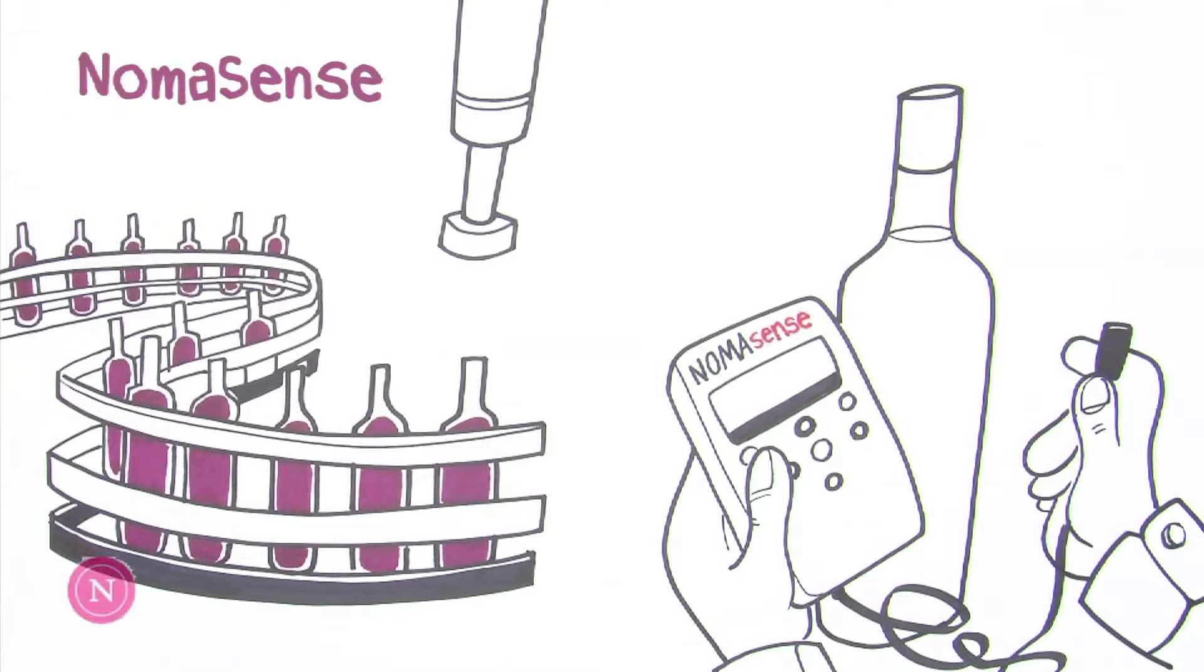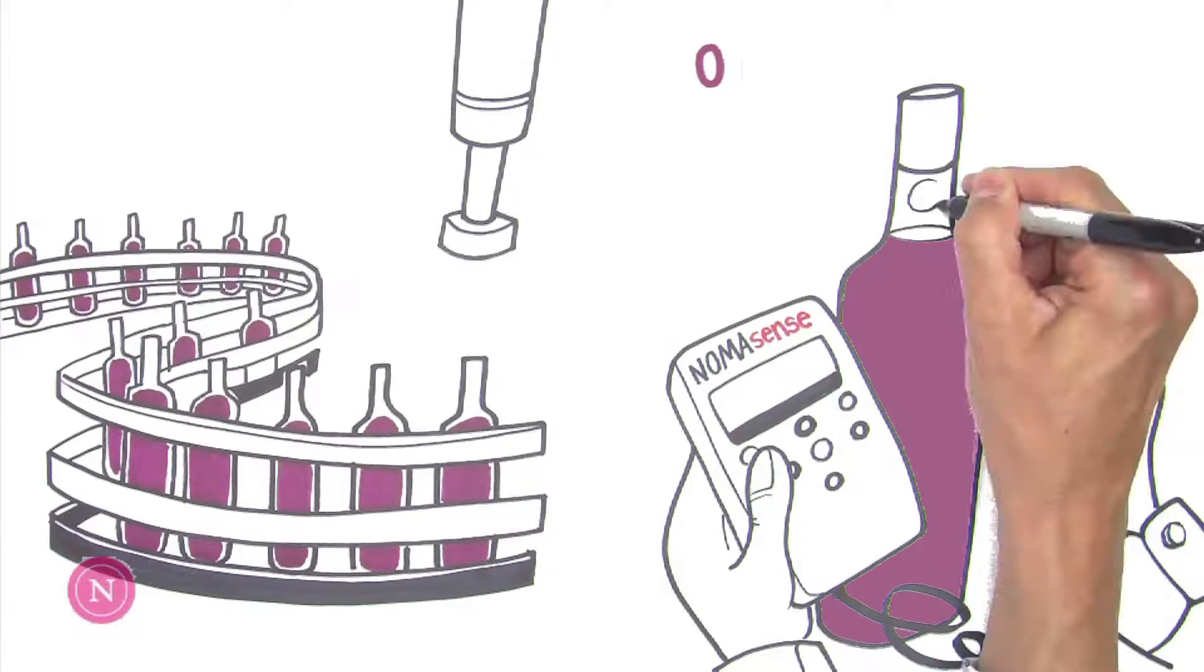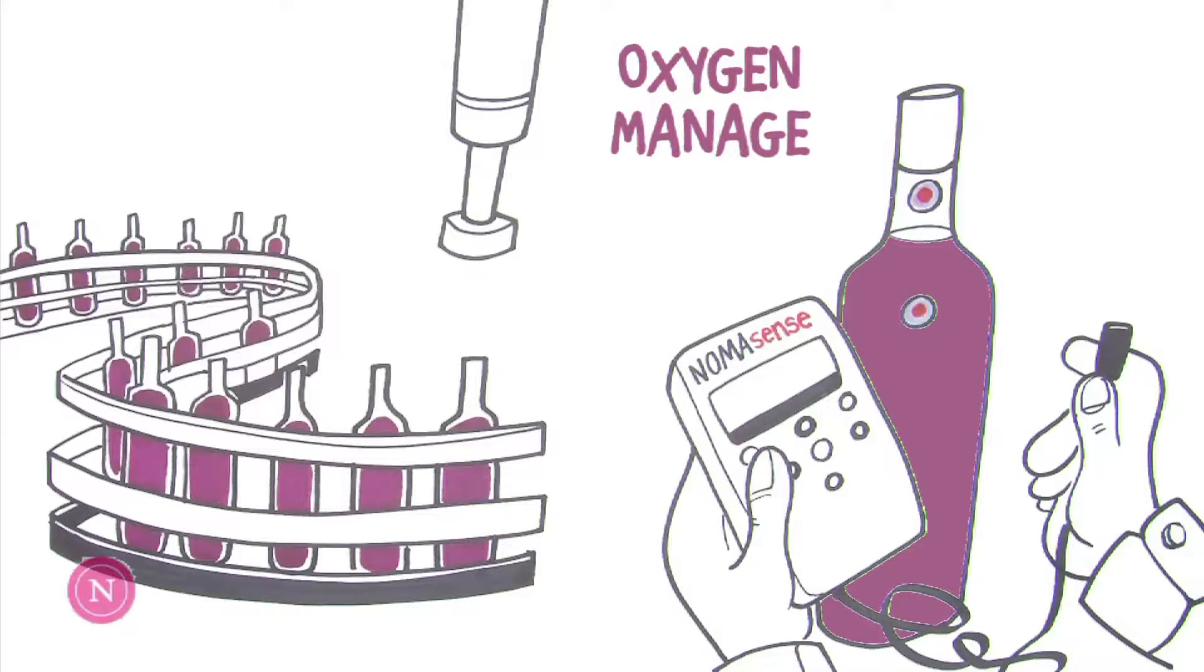In addition, winemakers can select the closure that allows the right amount of oxygen into the bottle to help manage the development of the wine. Measuring oxygen and selecting a closure with specific oxygen ingress are two examples of oxygen management.